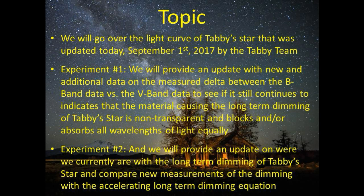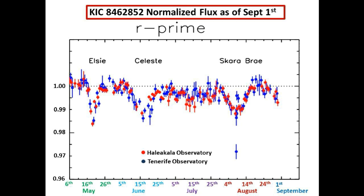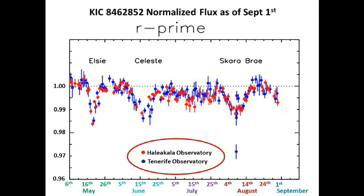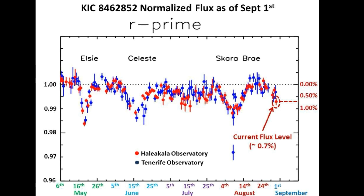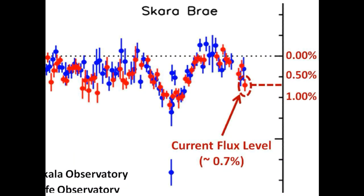This is a normalized light curve of Tabby's Star taken in the R-band for September 1st. The red and blue data points were taken at an observatory in Hawaii and in Spain respectively. Circled in red is the latest measurement taken today, showing that we are now down approximately 0.7 percent below the nominal flux level. 0.7 percent is about the level where we declared the beginning of a short-term dimming event, so just when you thought all would be quiet — here we are again, guys. We're headed down, and who knows, maybe it's going to be a deep one this time.